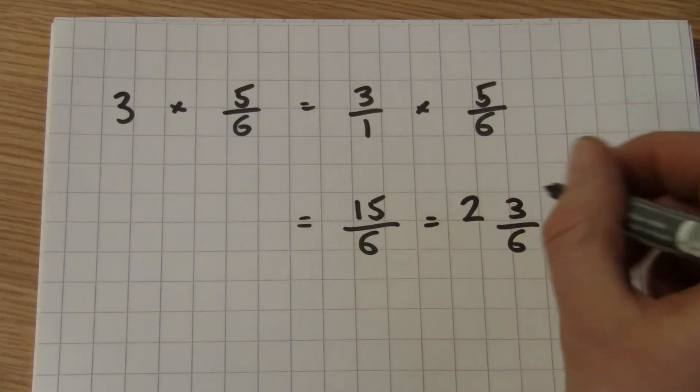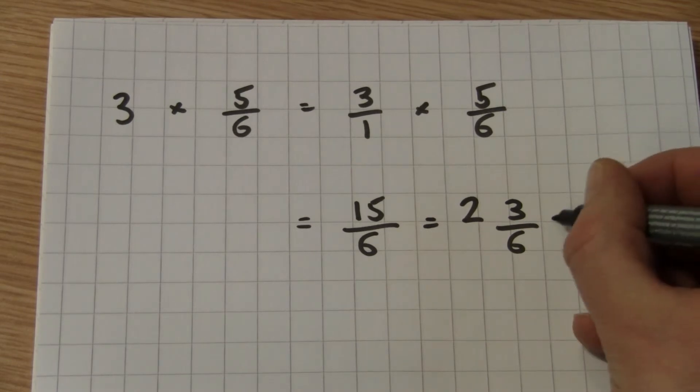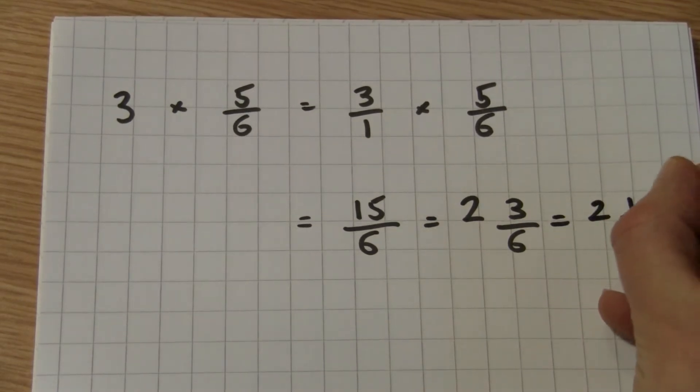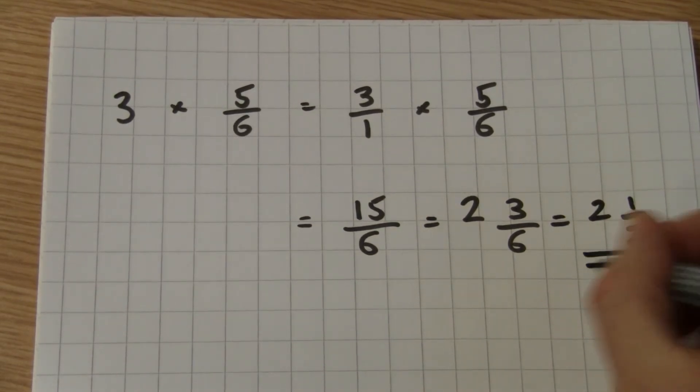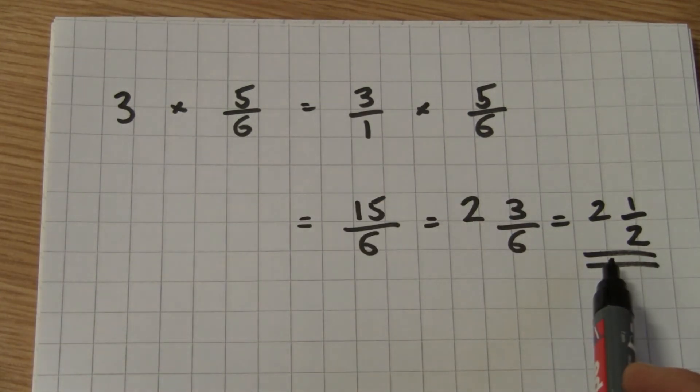We know that this still could be simplified further, because we're going to divide both 3 by 3 and 6 by 3, which gives us 2 and 1 half. So 3 multiplied by 5/6 is 2 and 1 half.